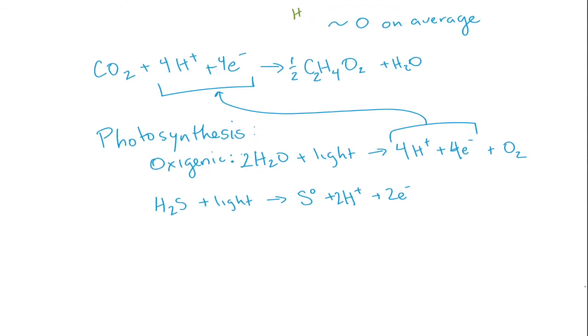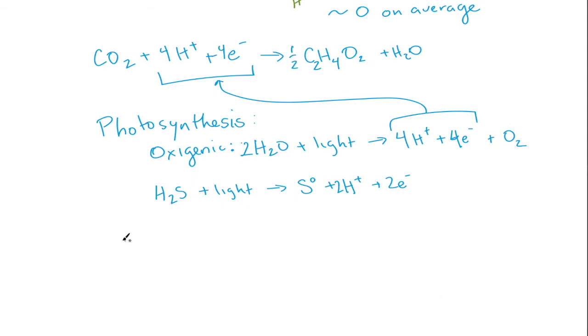There are also chemical reactions that can provide protons and electrons, and if it doesn't involve light, we call it chemosynthesis. Chemical synthesis can work, for example, with hydrogen, and through various processes this can break down into 2 protons plus 2 electrons, again producing those protons and electrons to reduce the carbon in the same way.